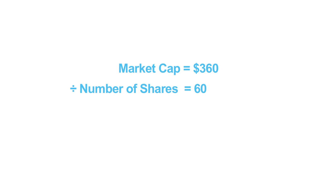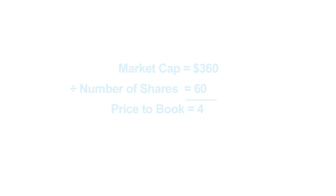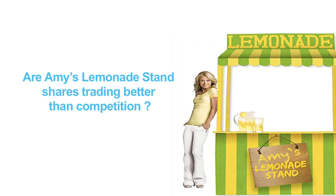This $300 can also be thought of as the value added by Amy to the initial capital. The market cap is $360. The price to book is $360 divided by $60, or $4. Why is the market valuing Amy's business at a premium — in fact, at four times its invested capital? Let's also look at other lemonade stand businesses in the market to see what premium the market is valuing them at. Is the premium for Amy's stand higher or lower compared to its peers? And if so, why?